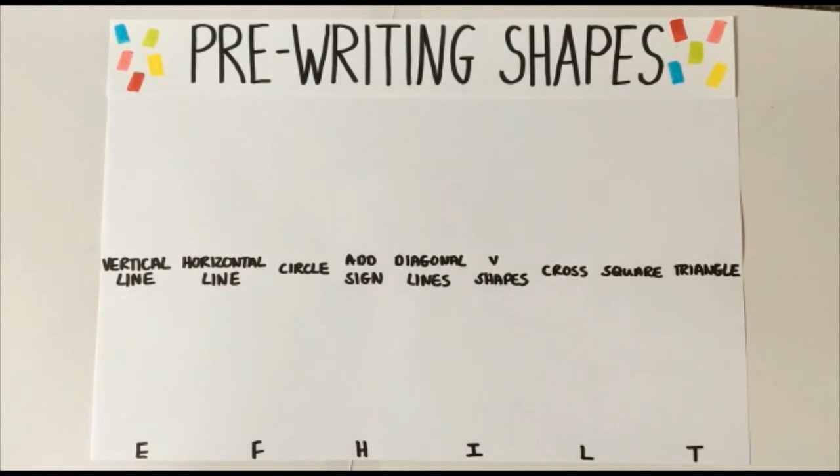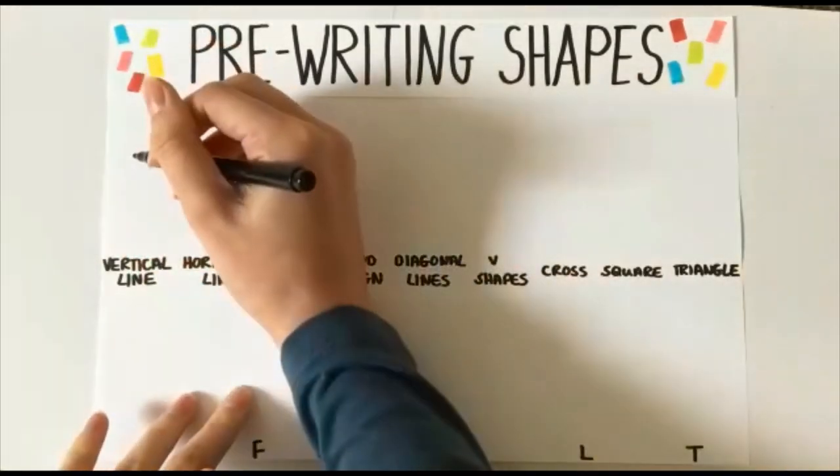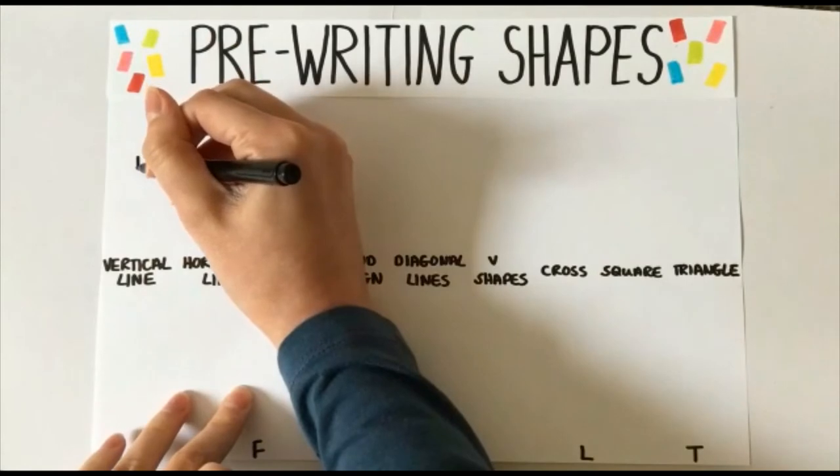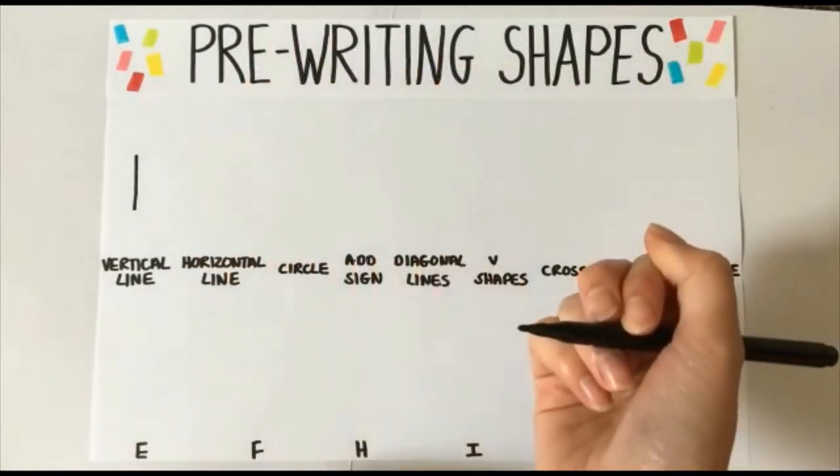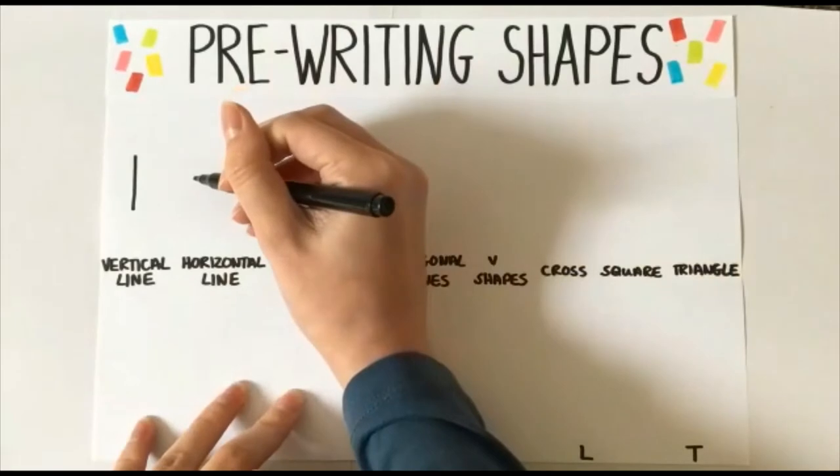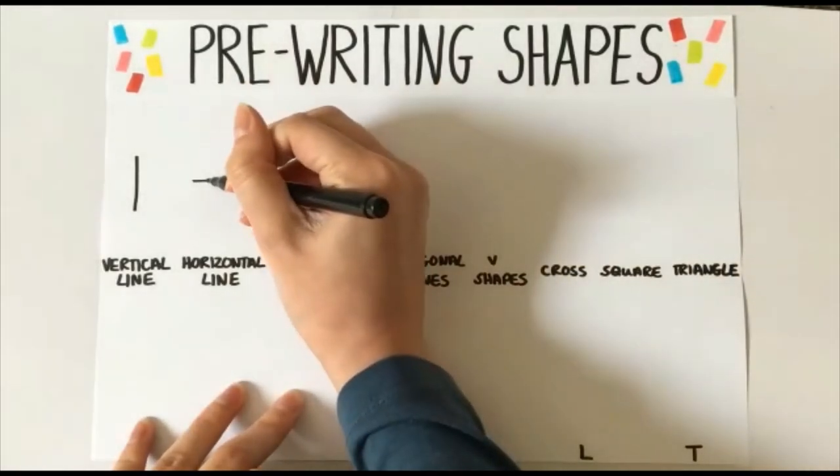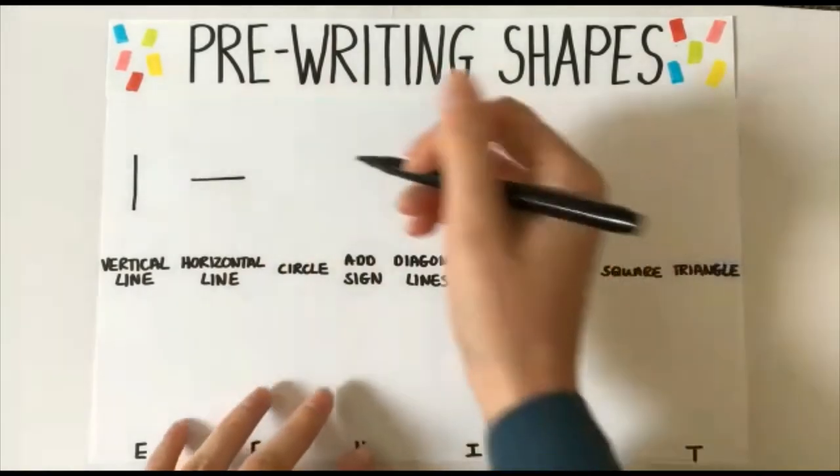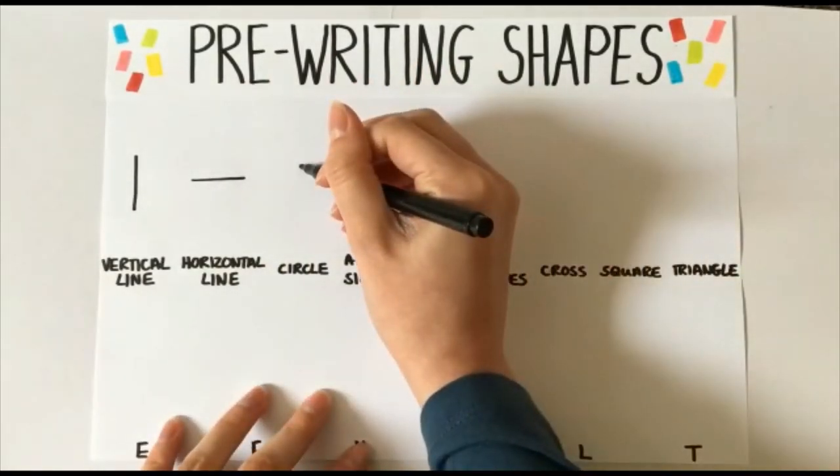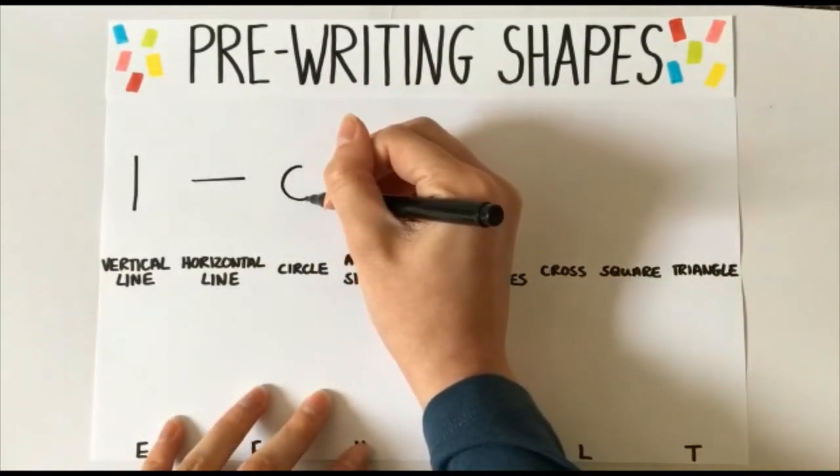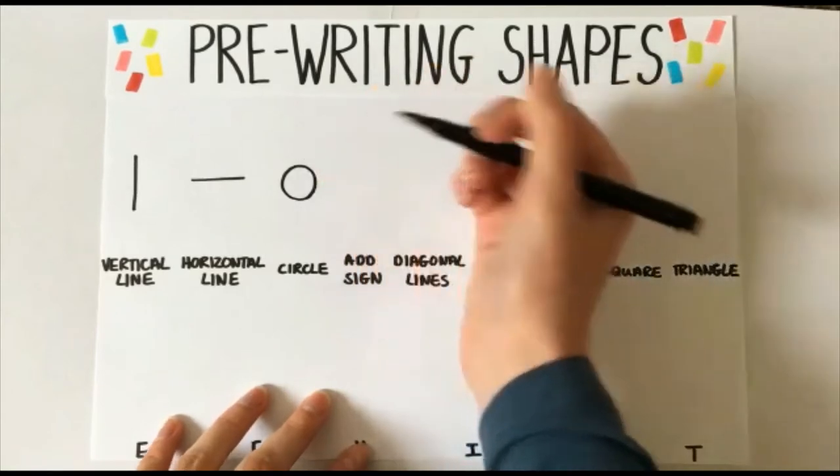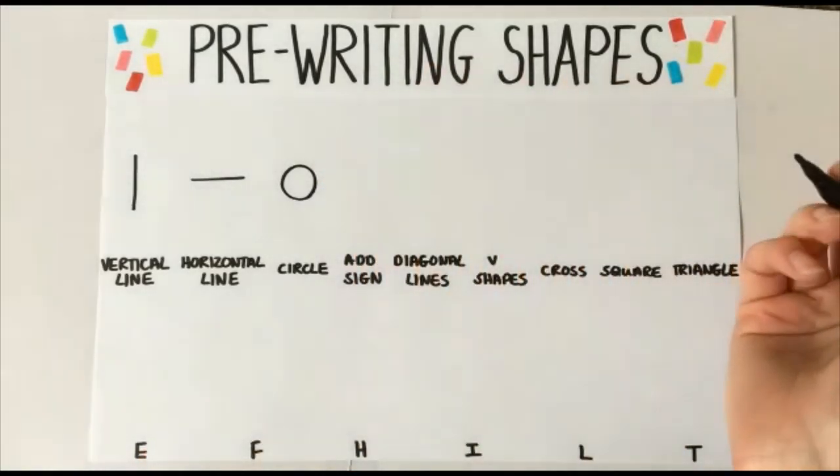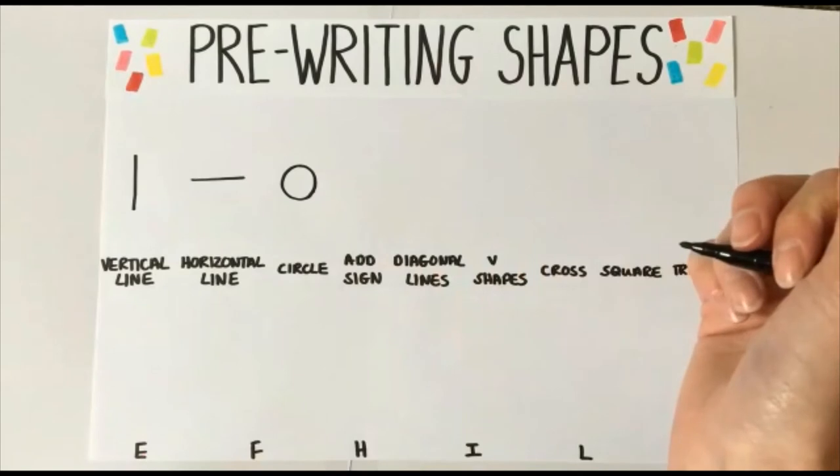Let's start with our first shape, the vertical line. For this shape we need to start at the top and go down. Horizontal line. We need to start at the left and go to the right. Circle. We need to start at the top, go round and back up to where we started. It's really important to talk about how you're drawing each shape.